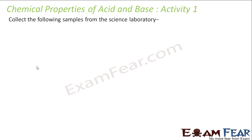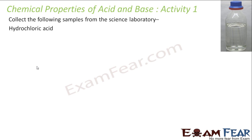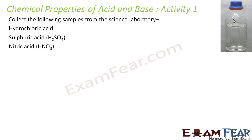The activity is pretty simple — we just collect some samples from the science laboratory. Hydrochloric acid, if you see, will be something like this — transparent in color. Sulfuric acid will also look like this. It is really difficult to differentiate between hydrochloric and sulfuric acid just by look. Nitric acid and acetic acid will also look like this — transparent.